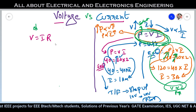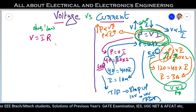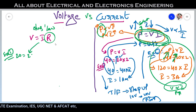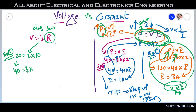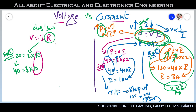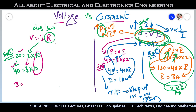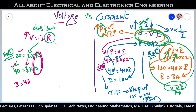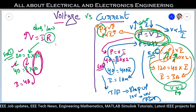Now let's look at Ohm's law, V = IR. I'll take two examples using the same starting values: V = 20V, I = 2A, and resistance = 10 ohms. In Example 1, I keep resistance constant and increase voltage from 20V to 40V. The current becomes I = 40 ÷ 10 = 4A. So with constant resistance, increasing voltage increases current from 2A to 4A. That's Ohm's law: it applies only when resistance and temperature are constant.